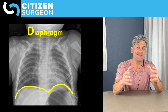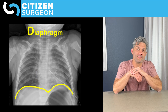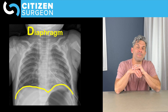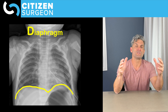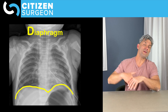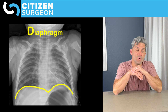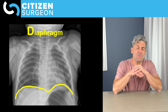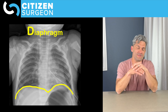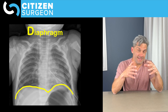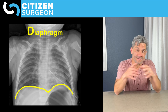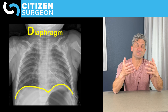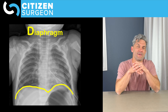Then I go to D — D is the diaphragm. One of the x-rays you saw today had a problem with D. I'm going to look for even contours of the diaphragm. Do we have a supremely elevated diaphragm, like we might see with a phrenic nerve injury or a diaphragmatic eventration? Do we have any air under the diaphragm? Do we have a defect in the diaphragm? The diaphragm is an important muscle that separates the thoracic and abdominal cavities. That's D.